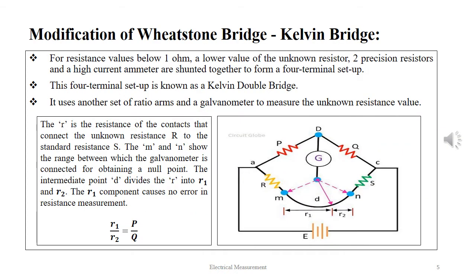Here we see the initial setup of a Kelvin double bridge. A lower value unknown resistor, two precision resistors, and a high current ammeter are shunted together to form the fourth terminal setup, using another set of ratio arms and a galvanometer as shown in the figure. The MN portion with the D pointer marks the extra arm. R is the resistance of the contacts connecting the unknown resistance R to the standard resistance S. M and N show the range between which the galvanometer is connected to obtain the null point.